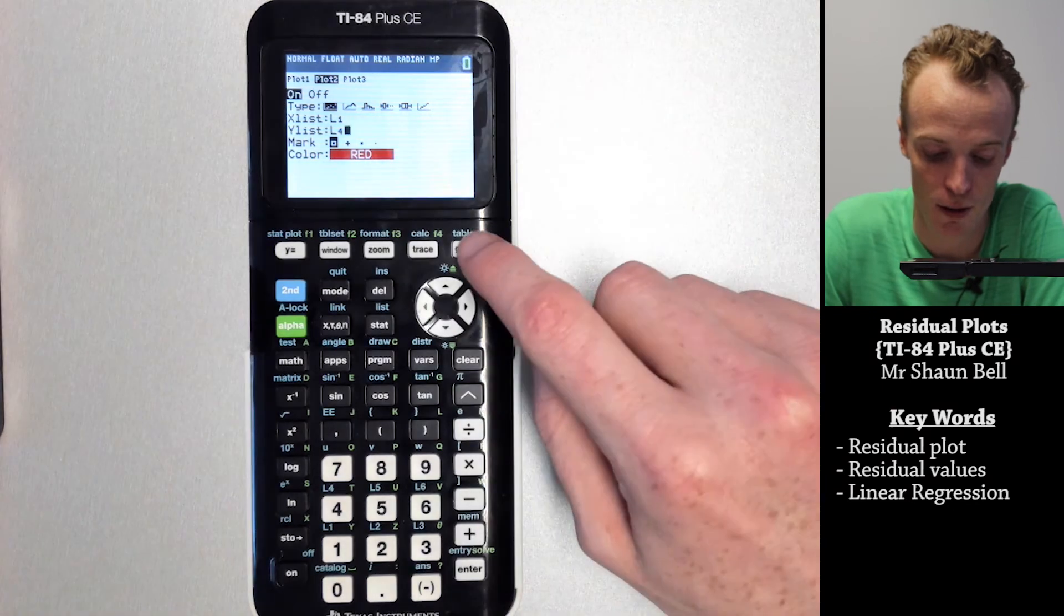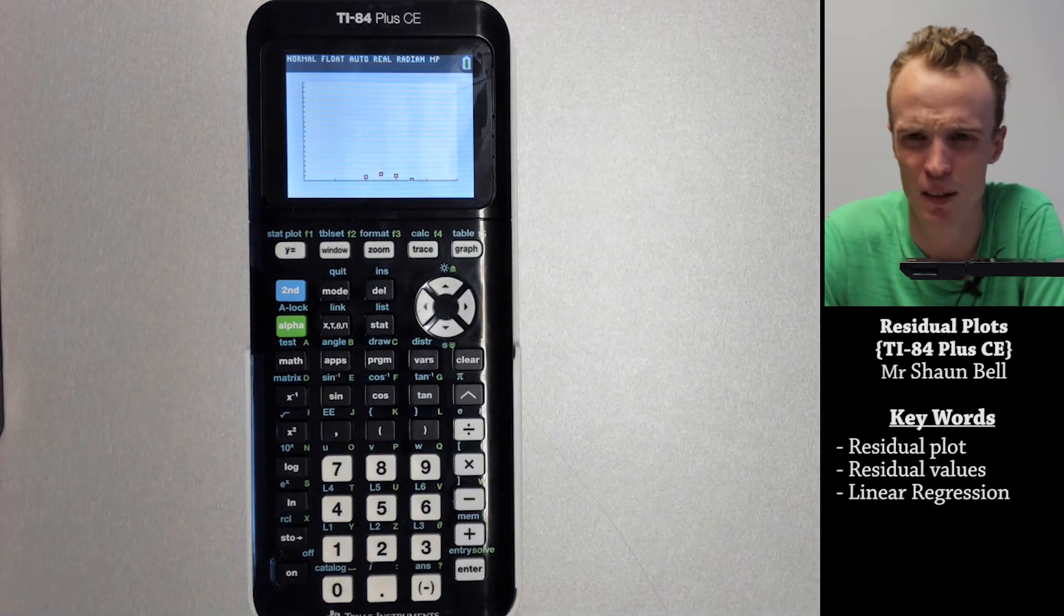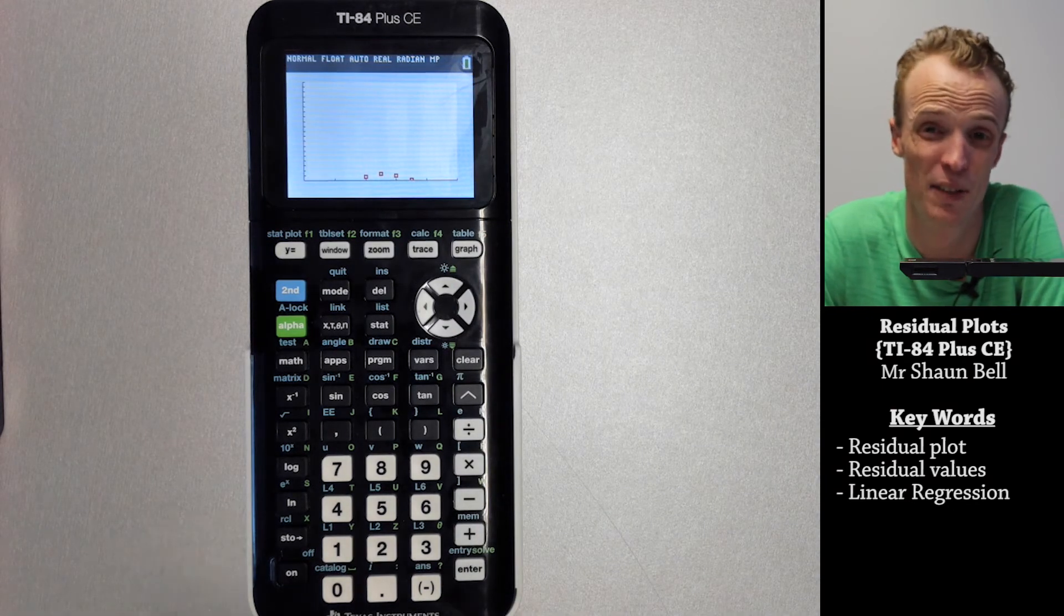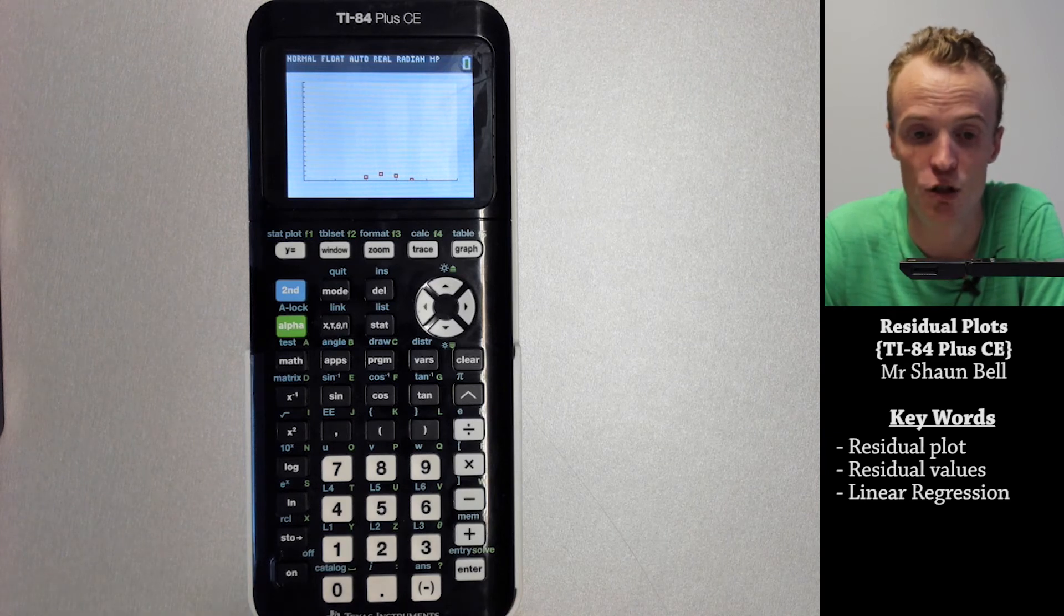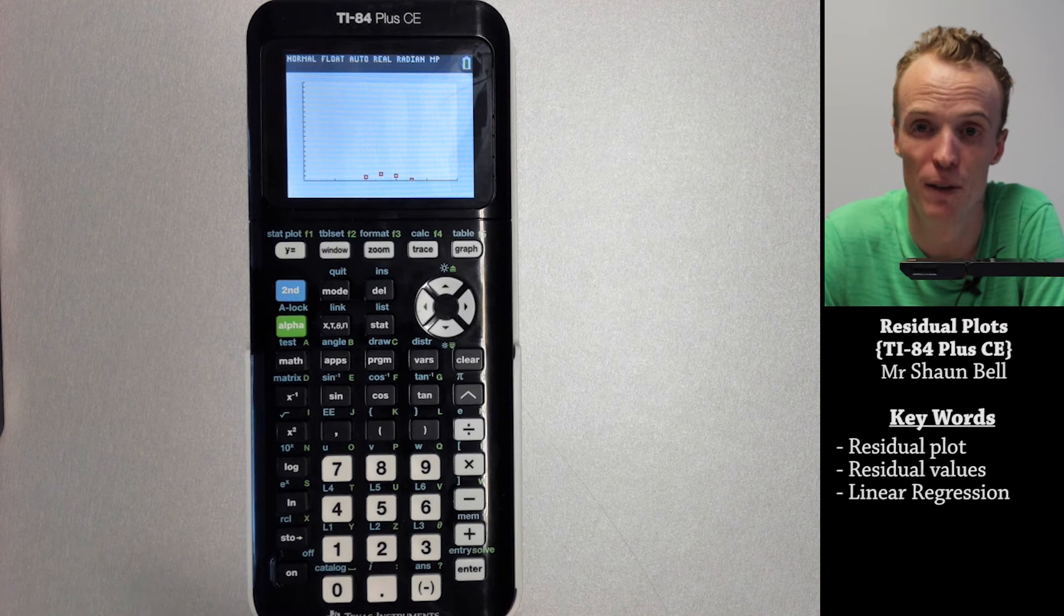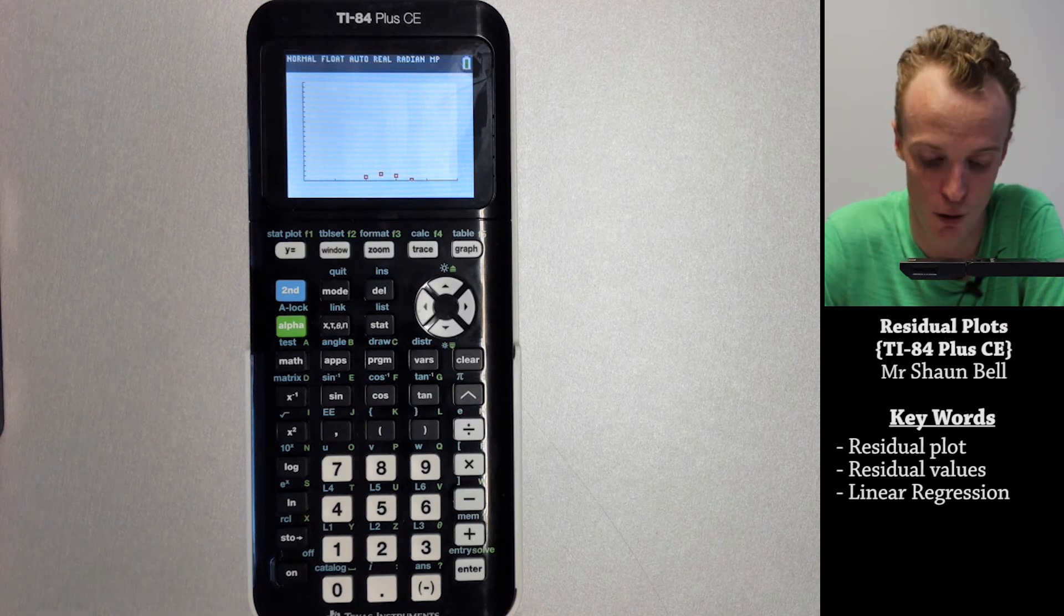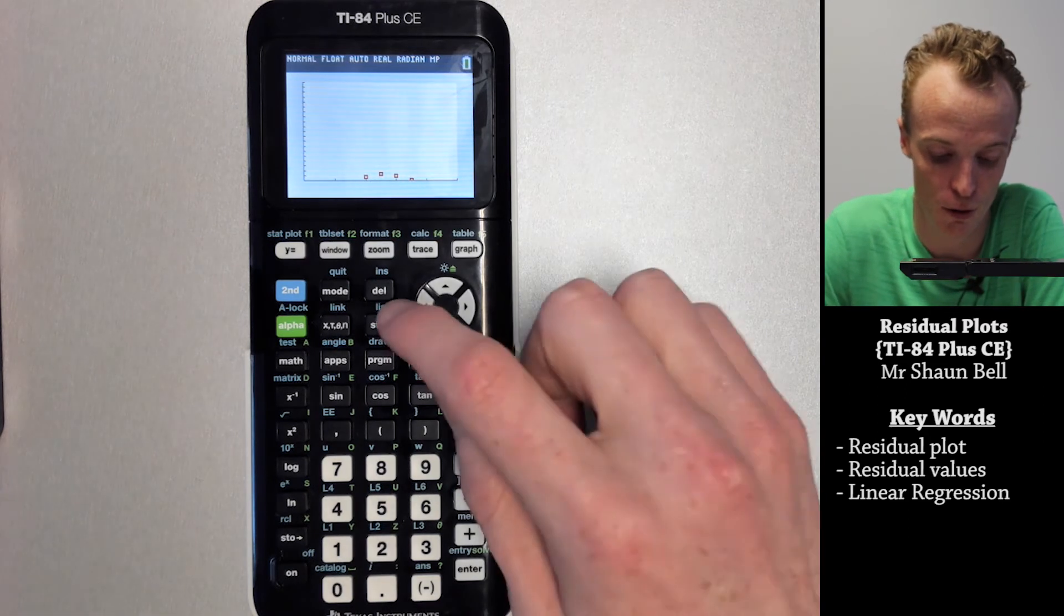Now you've done that, if you hit the graph button you'll get something that looks like this assuming you had the view window I had previously. Now I'm going to need to change my view window to better fit the residual values that I've got.